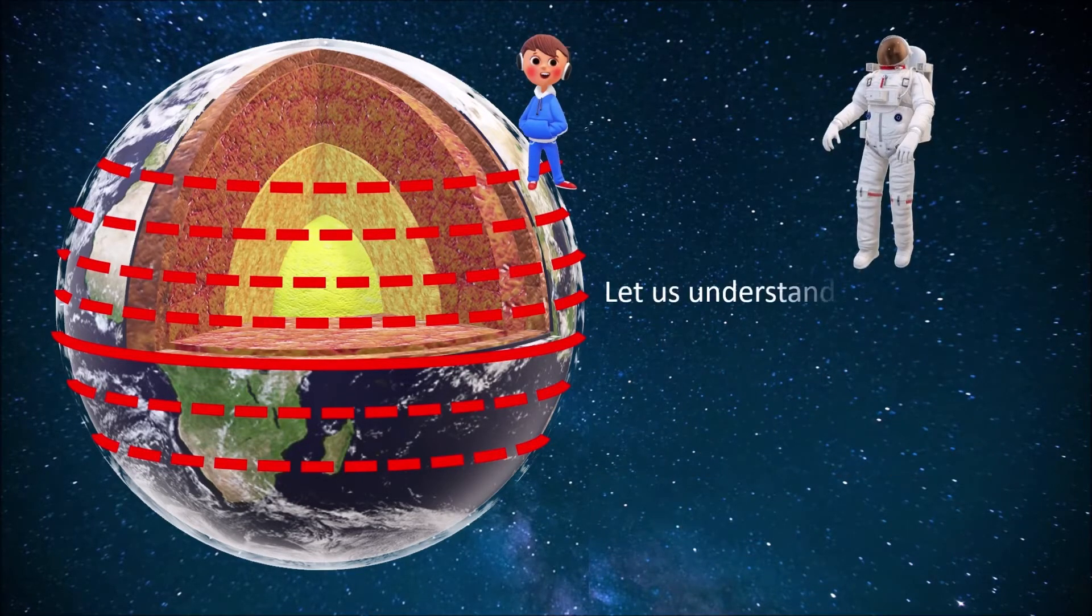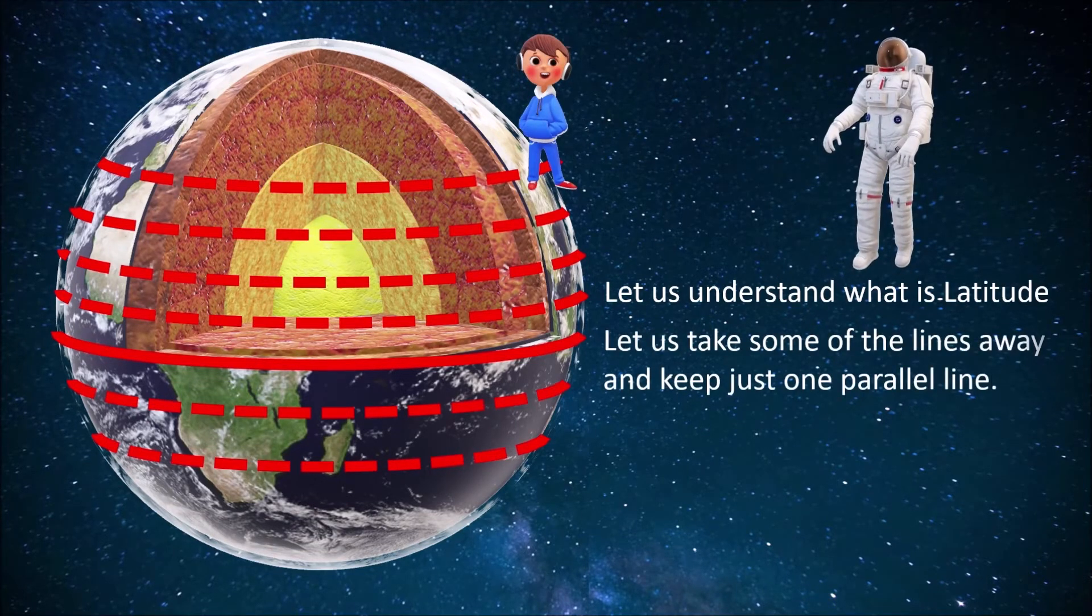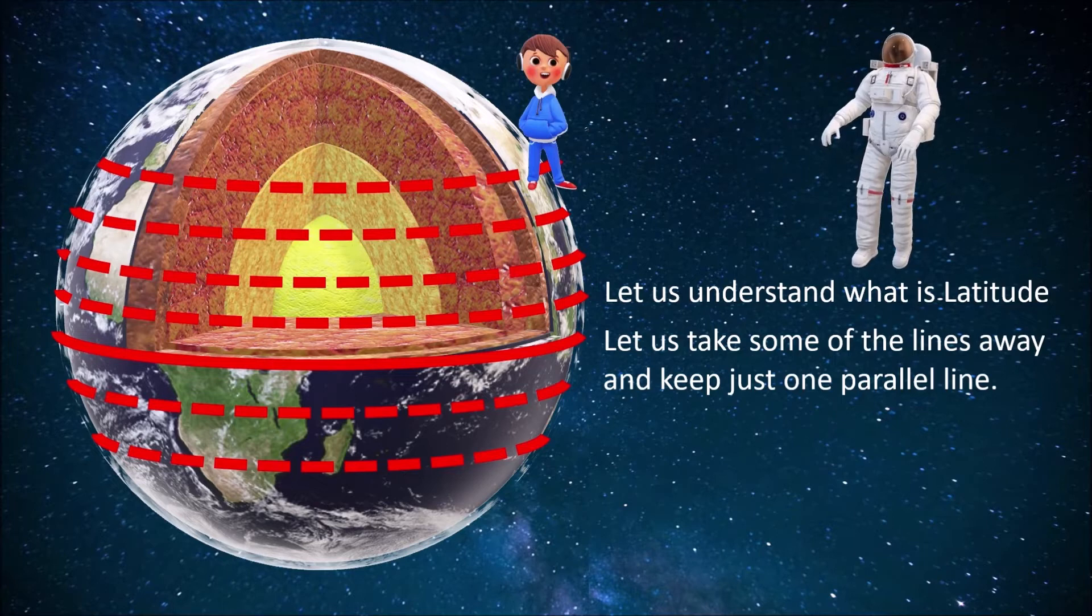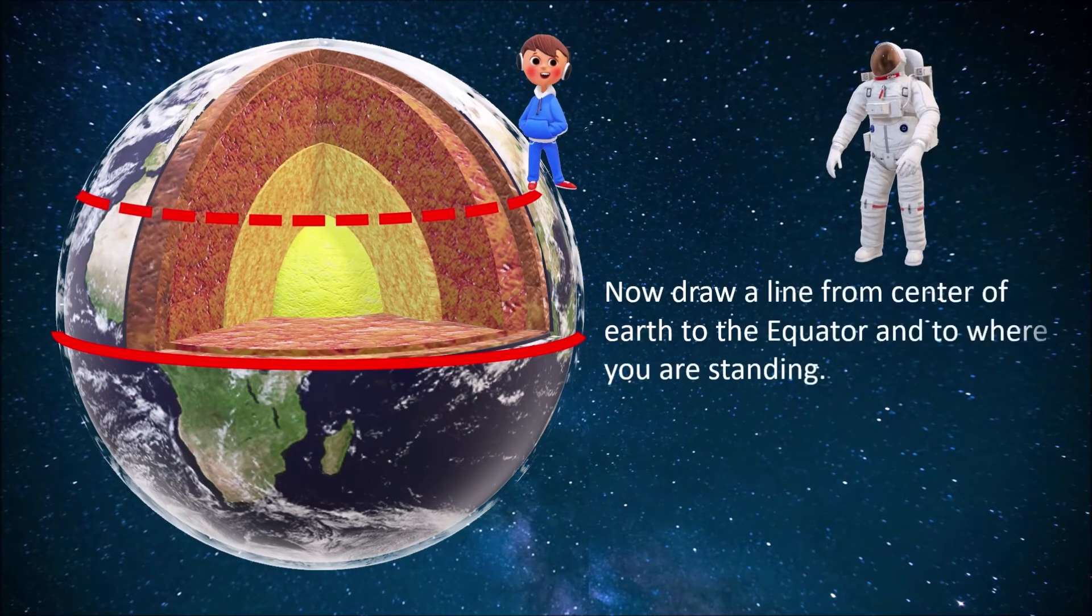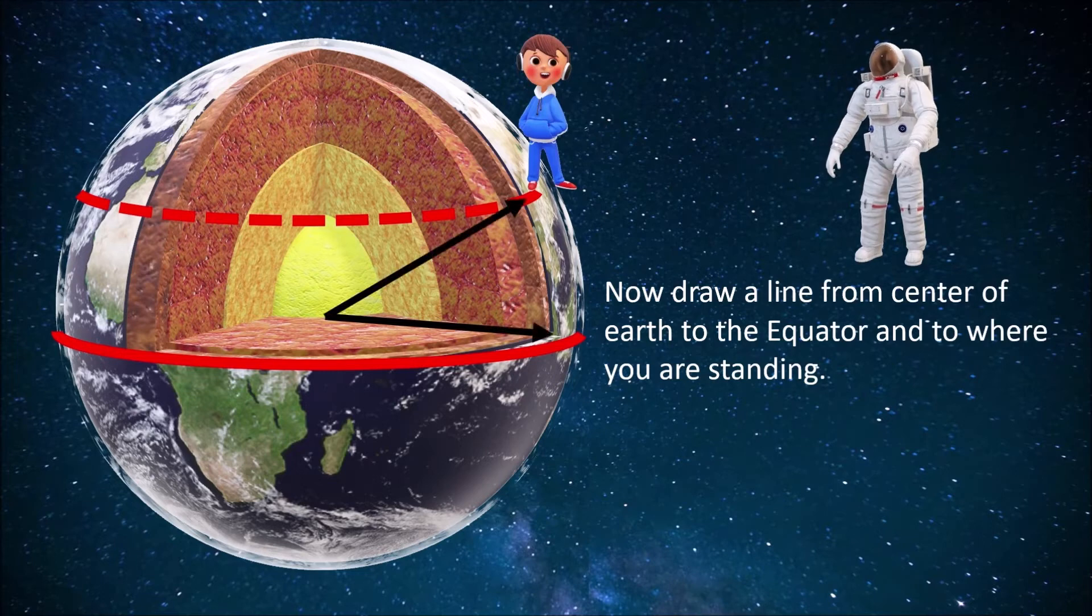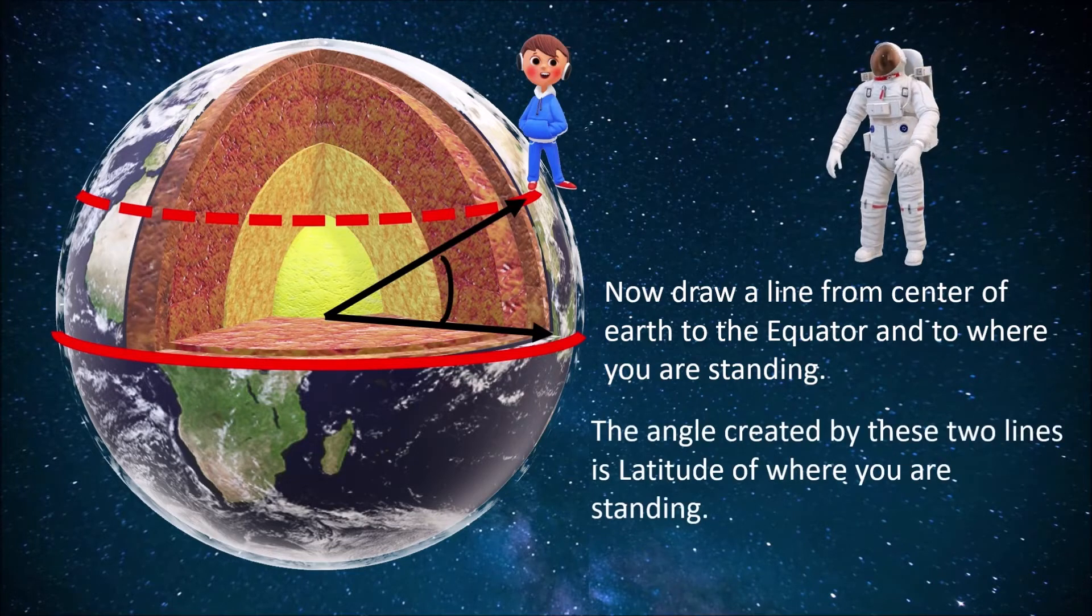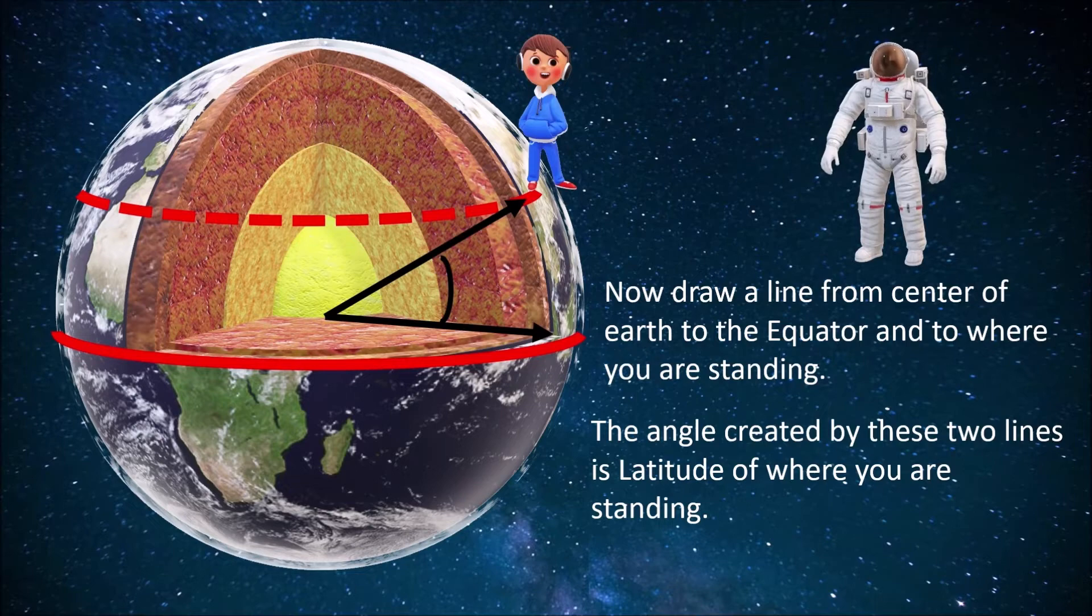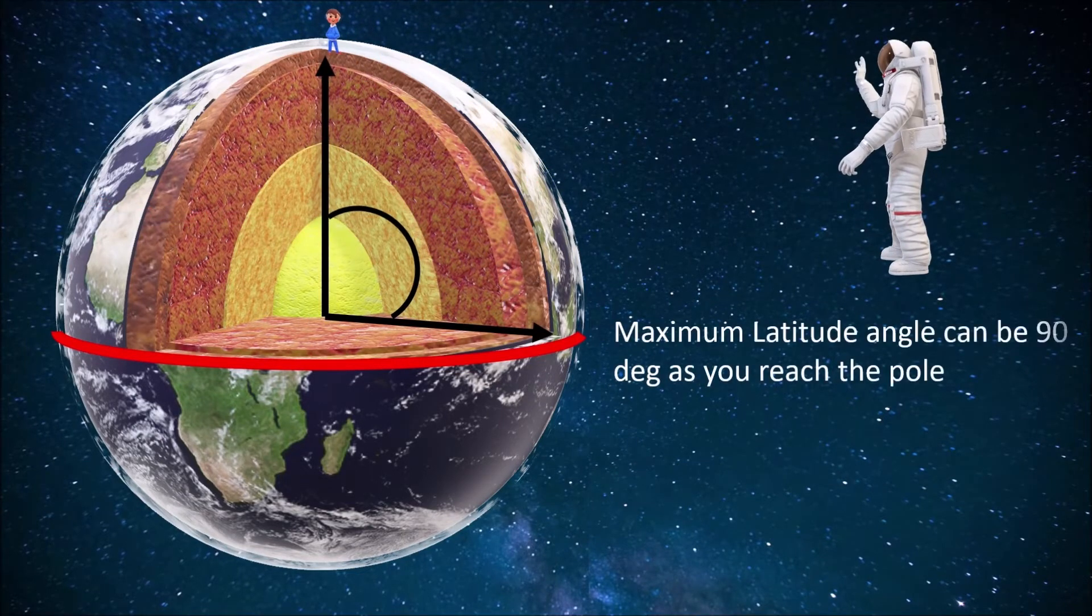Let us understand what is latitude. Let us take some of the lines away and keep just one parallel line. Now, draw a line from the center of the earth to the equator and to where you are standing. The angle created by these two lines is latitude of where you are standing. Maximum latitude angle can be 90 degrees as you reach the pole.